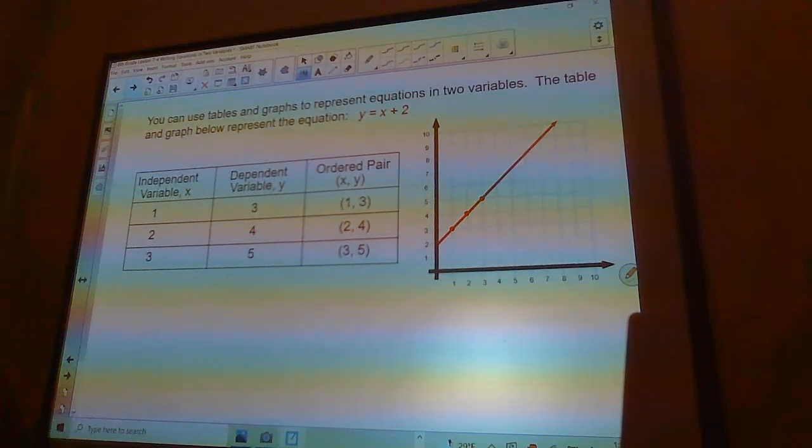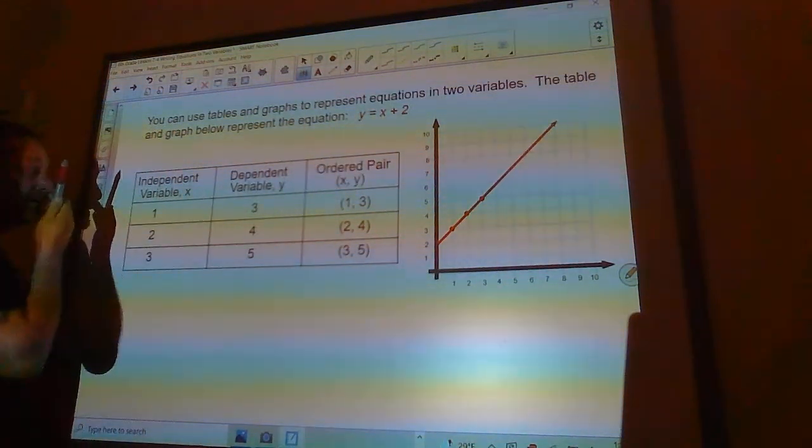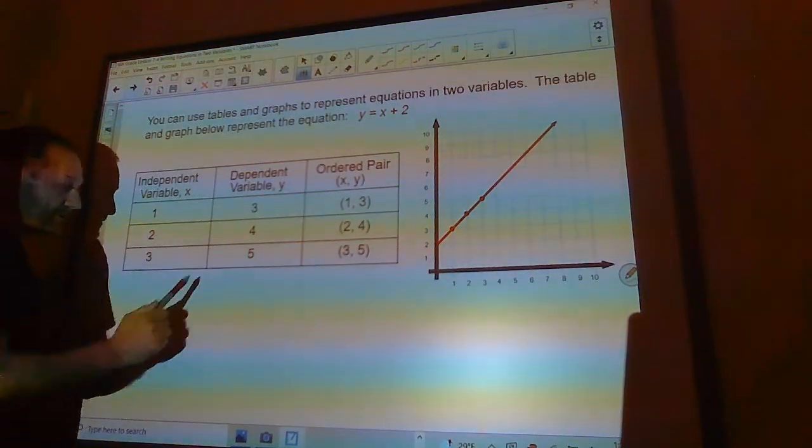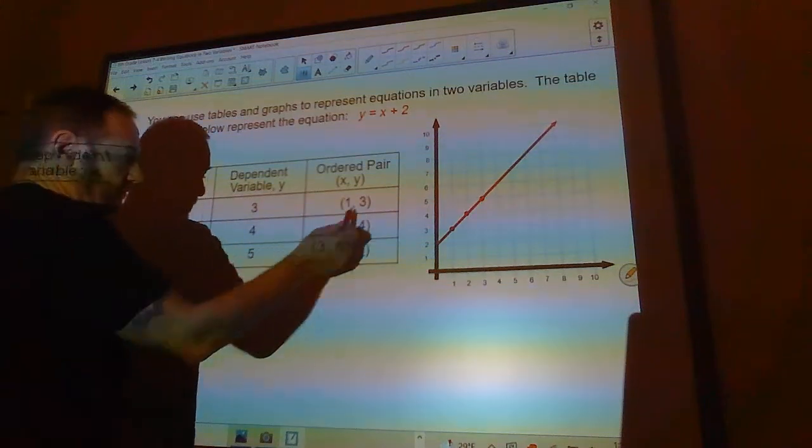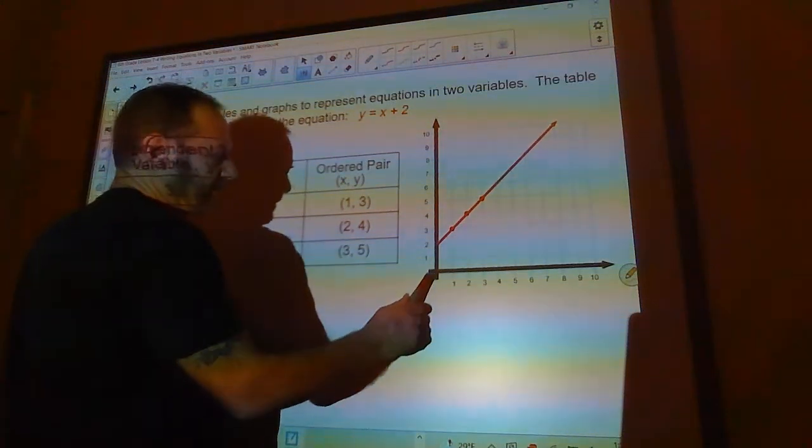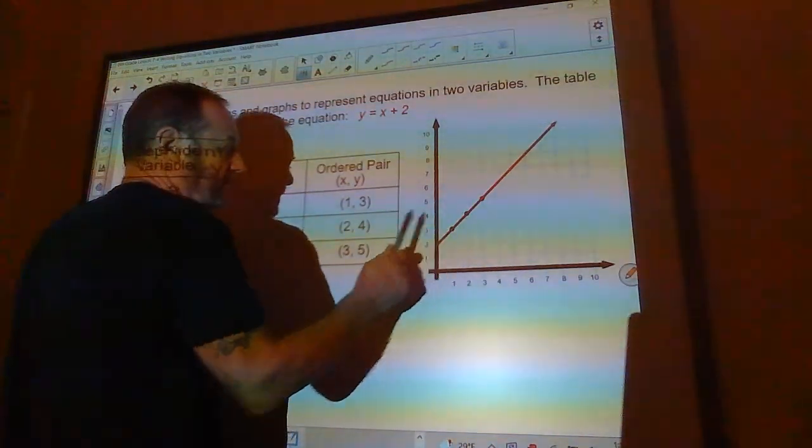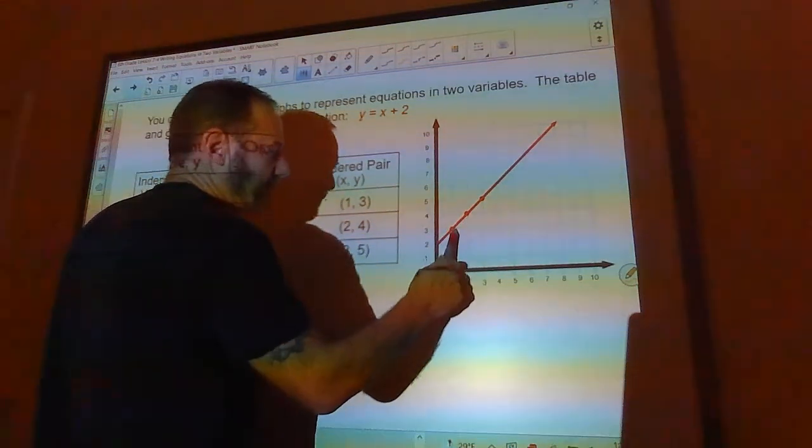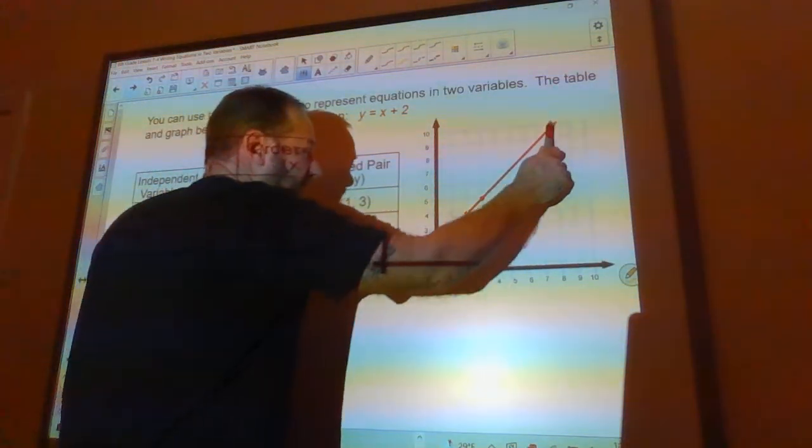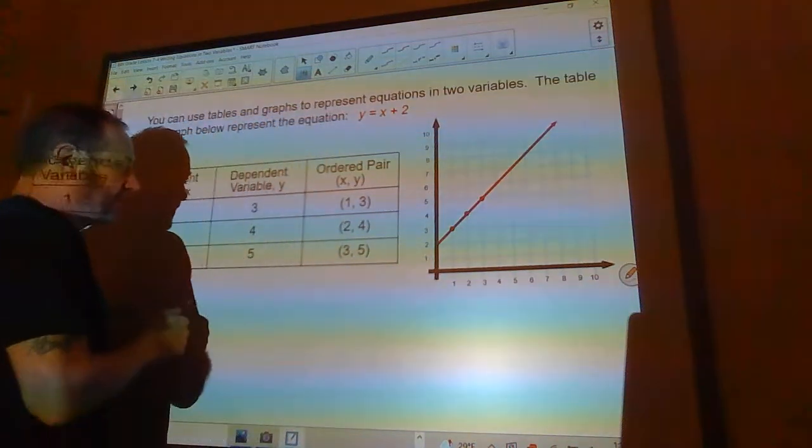You can use tables and graphs to represent equations in two variables. So the table and graph below represent the equation y equals x plus 2. So you can see, here's my x's. So if I take the x and add 2 to it. 1 plus 2 is 3. 2 plus 2 is 4. 3 plus 2 is 5. So here's my ordered pairs: (1, 3), (2, 4), and (3, 5). I can also show that on a graph. So here's (1, 3) is on the line. And (2, 4) is there. And (3, 5) is there. So I have three points. They all form a straight line. I can connect them all together like this. And any point on that graph or on the graph of that line would be an ordered pair here.